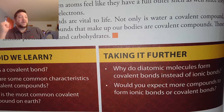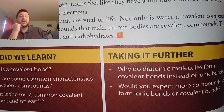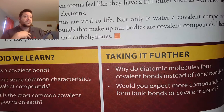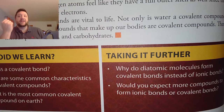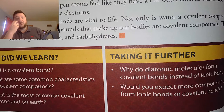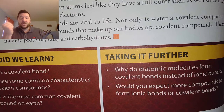Why do diatomic molecules form covalent bonds instead of ionic bonds? Because their electronegativities are identical — they're identical atoms, so they want to pull just as hard as the other atom. Instead of being able to steal, they're forced to share. Would you expect more compounds to be ionic or covalent? This question doesn't really have a great answer — there are many ionic compounds in Earth's crust, but in living things almost everything you deal with day-to-day — plastics, wood, food, the chair you're sitting on — is covalently bound.